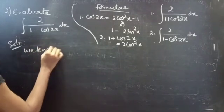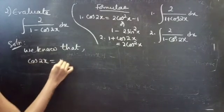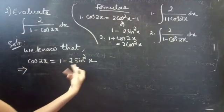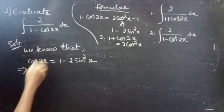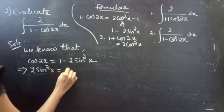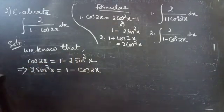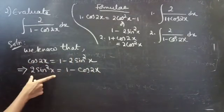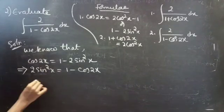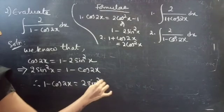Here we are going to consider the formula cos 2x equals to 1 minus 2 sin square x. We know that cos 2x equals to 1 minus 2 sin square x. Taking 2 sin square x to the left hand side and cos 2x to the right hand side, you get 2 sin square x equals to 1 minus cos 2x. So 1 minus cos 2x equals to 2 sin square x, and you can replace 1 minus cos 2x with 2 sin square x.